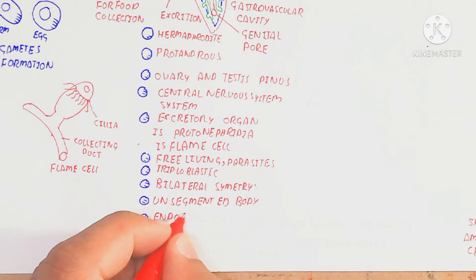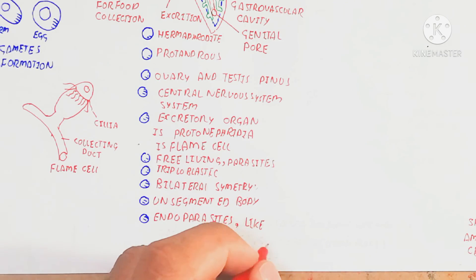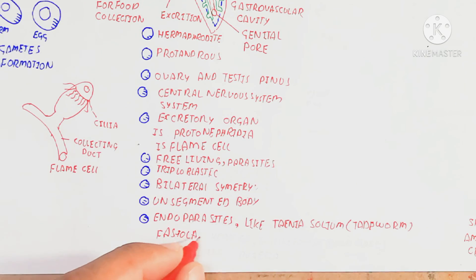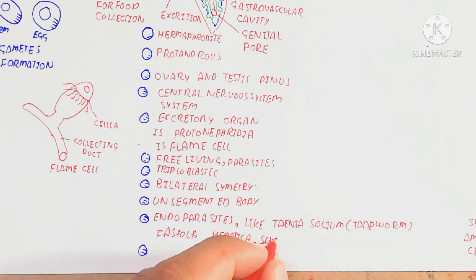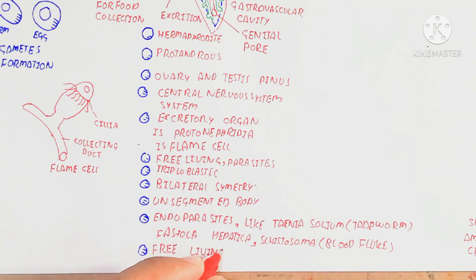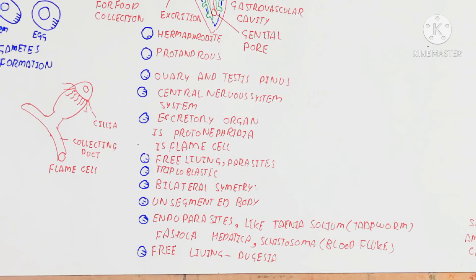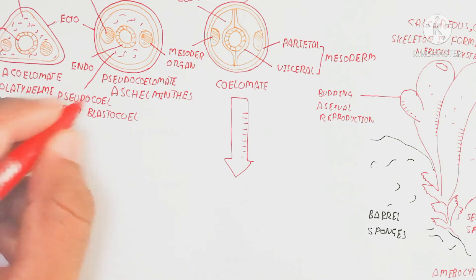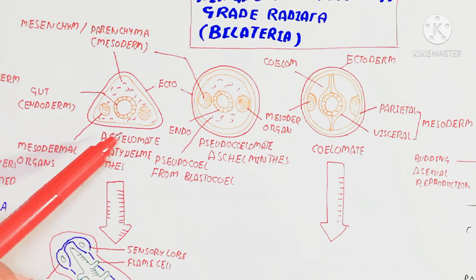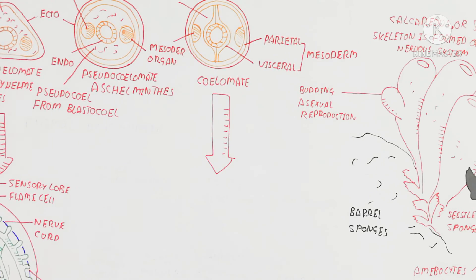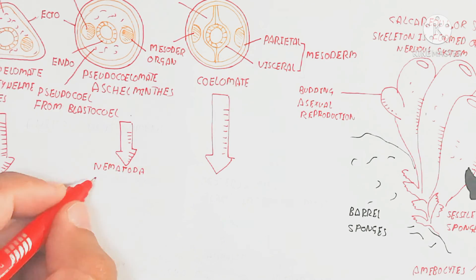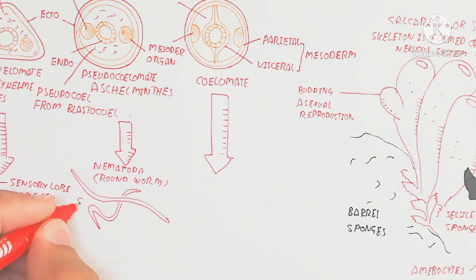Platyhelminthes are free-living or parasitic, triploblastic, and show bilateral symmetry — meaning two mirror-image halves can be formed. They have an unsegmented body unlike Annelida, which we will discuss later. Endoparasites include Taenia solium (tapeworm), Fasciola hepatica, and Schistosoma (blood fluke). Planaria and Dugesia are free-living examples. Moving to the pseudocoelomate group, phylum Nematoda is the coelomate containing nematodes.